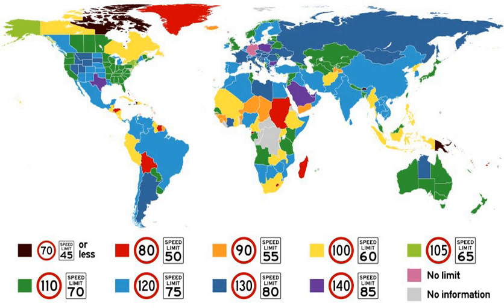For the United Kingdom and the United States, the speed limit is listed in miles per hour. Germany, with its autobahns, is the only country without a general speed limit on its highways. The Isle of Man is the only jurisdiction without a general speed limit on rural two-lane roads.